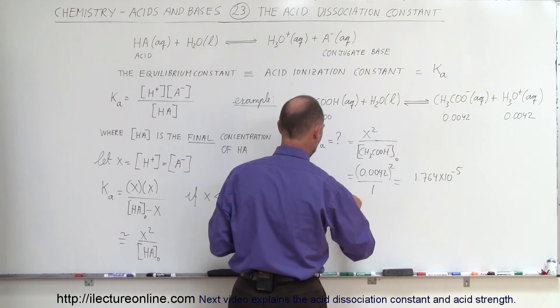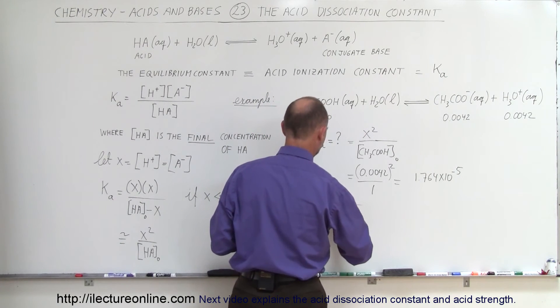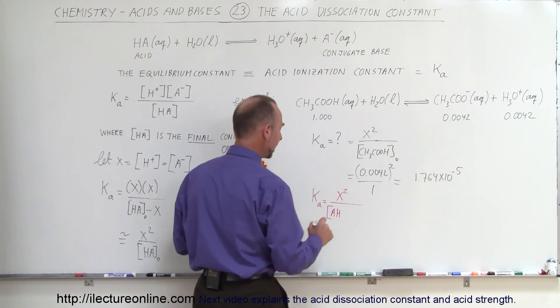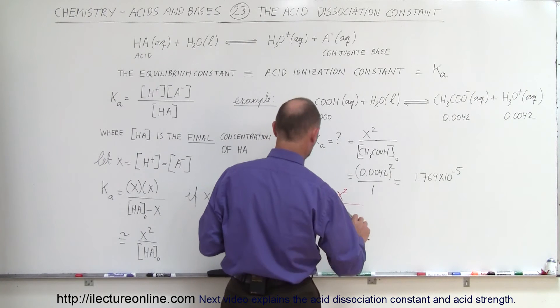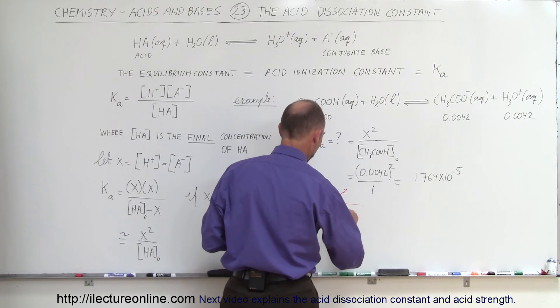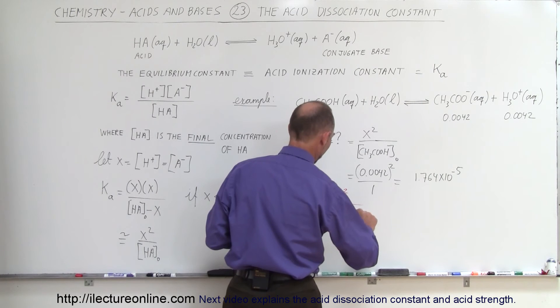And let's say now we don't want to make the approximation, so in this case, Ka is equal to X squared divided by the concentration of our original acid. I'll just write it like that, AH or HA, I think we use HA for the generality. So HA minus X.